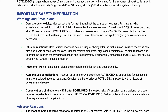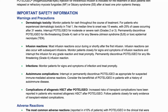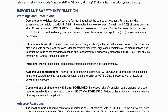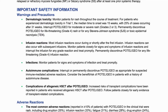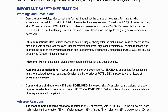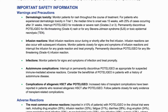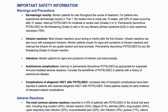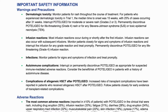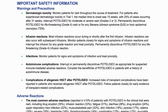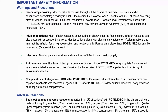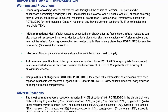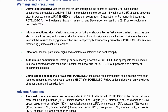Infusion reactions: Most infusion reactions occur during or shortly after the first infusion, but can also occur with subsequent infusions. Monitor patients closely for signs and symptoms of infusion reactions, interrupt the infusion for any grade reaction and treat promptly. Permanently discontinue mogamolizumab for any life-threatening grade 4 infusion reaction. Infections: Monitor patients for signs and symptoms of infection and treat promptly. Autoimmune complications: Interrupt or permanently discontinue mogamolizumab as appropriate for suspected immune-mediated adverse reactions.